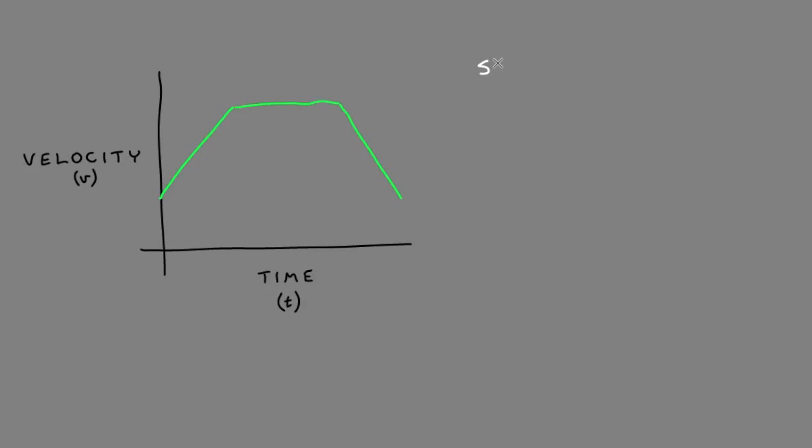We know slope is the change in y over the change in x, rise over run. And on a velocity time graph, our y is the velocity. So we're going to do change in velocity as a vector quantity over change in x.